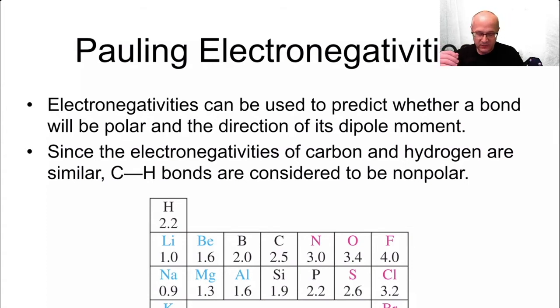Okay, now it goes from basically zero or 0.1 or something to four, four being the highest. Now fluorine is the element with the highest electronegativity.